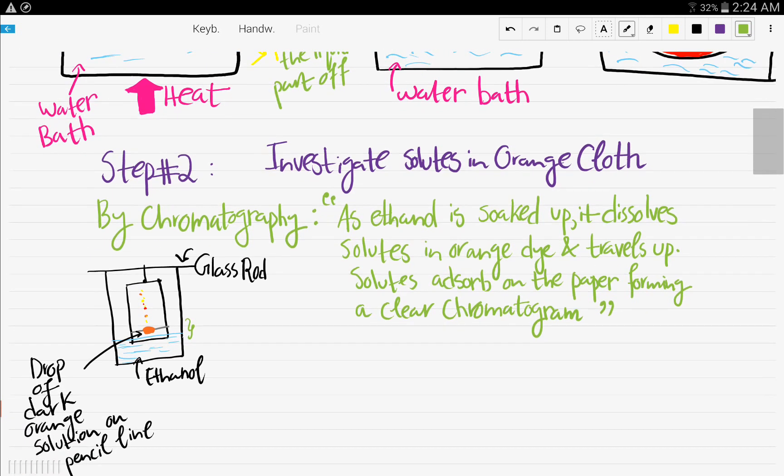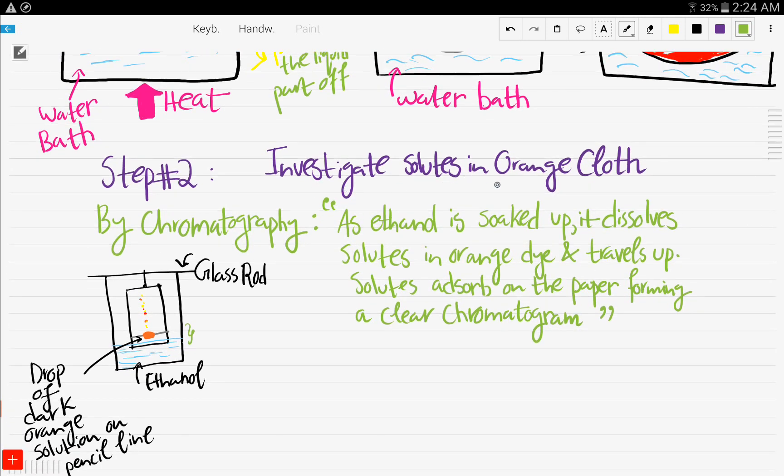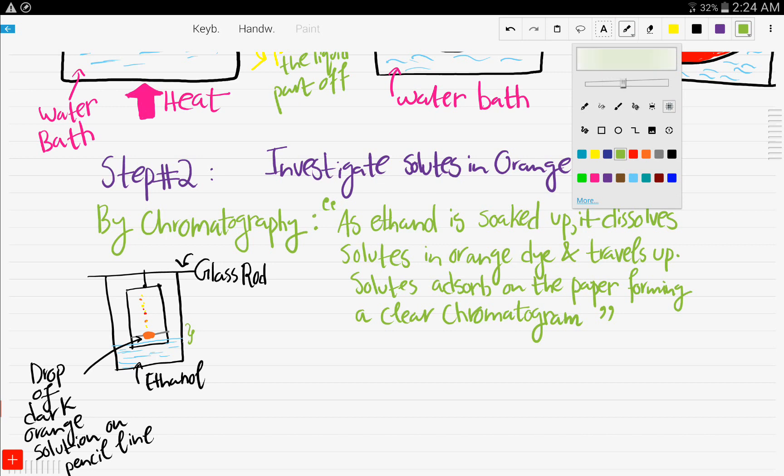Now step number two is investigate the solutes in the orange cloth, just like the previous video by chromatography. As ethanol is soaked up, it dissolves the solutes in the orange dye and travels up. The solutes adsorb. As I said, adsorb is not absorb. Adsorb on the paper, forming a clear chromatogram.